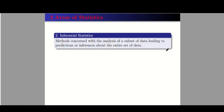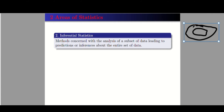The second area is inferential statistics. This area is concerned with methods of analyzing a subset of data leading to predictions or inferences about the entire set of data. So if we have an entire set of data and you just get a subset of it, whatever conclusion or generalization you have made from the smaller subset can be used as a generalization for the whole set of data.